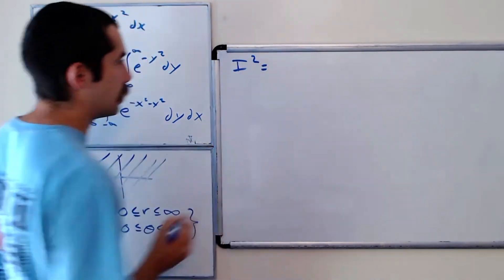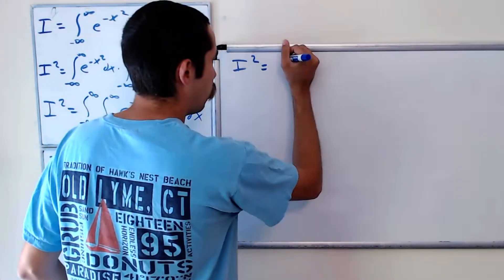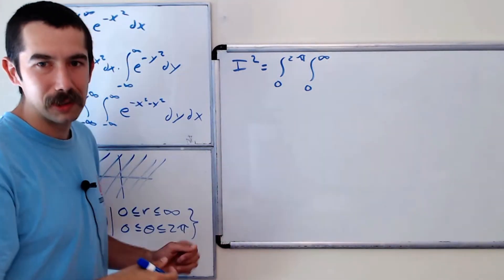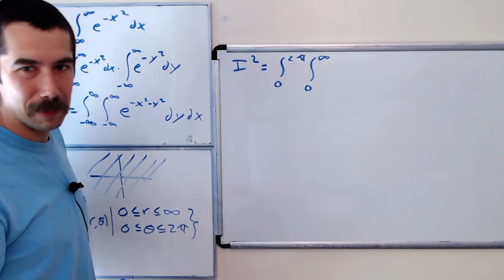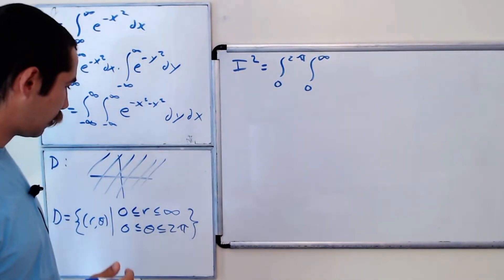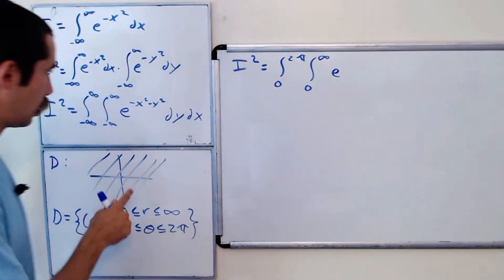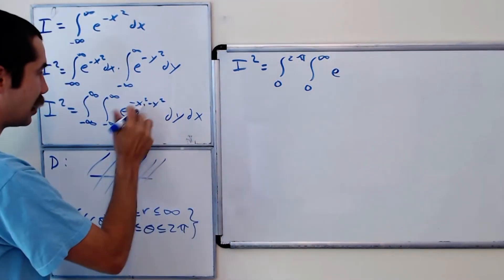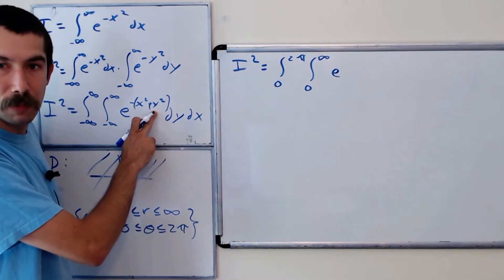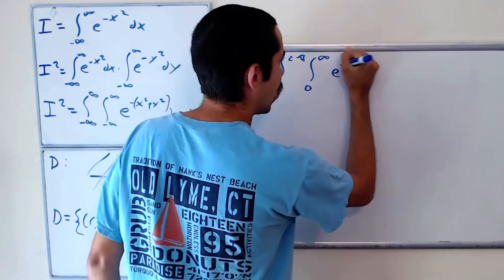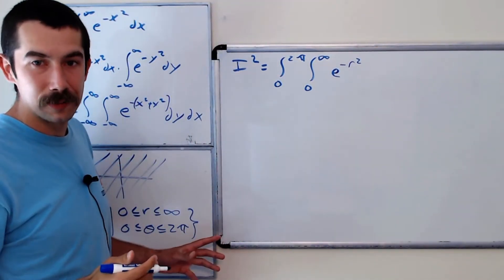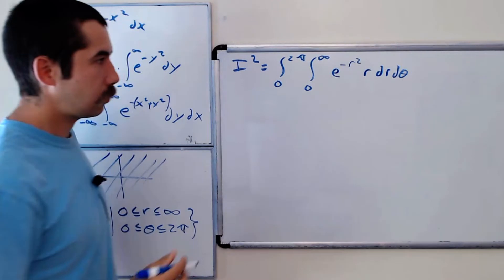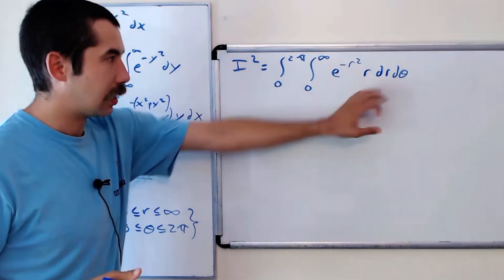So I squared is equal to the integral from zero to two pi, the integral from zero to infinity. We should technically be taking limits as something goes to infinity, but for the sake of simplicity we'll leave it like this. Our function is e to the negative x squared minus y squared, which we can rewrite as e to the negative open-paren x squared plus y squared close-paren. Since x squared plus y squared equals r squared, this becomes e to the negative r squared. In polar coordinates we have an additional integration factor of r, so we have e to the negative r squared times r dr d theta — because dx dy equals r dr d theta in polar coordinates.